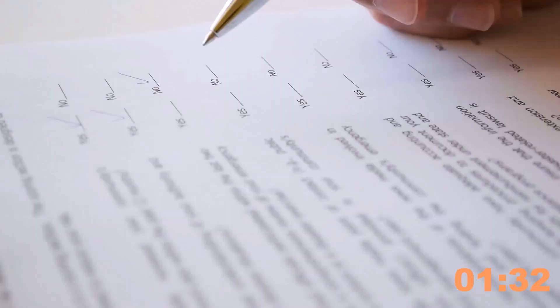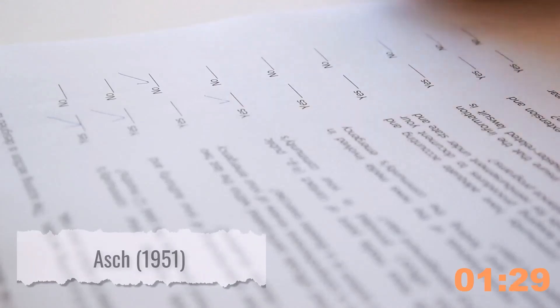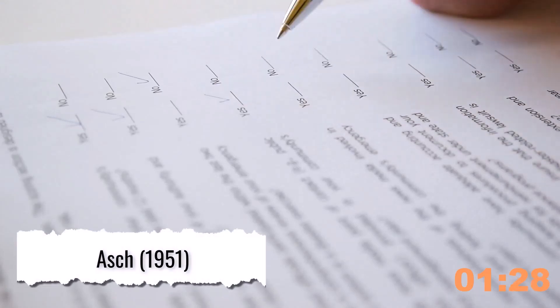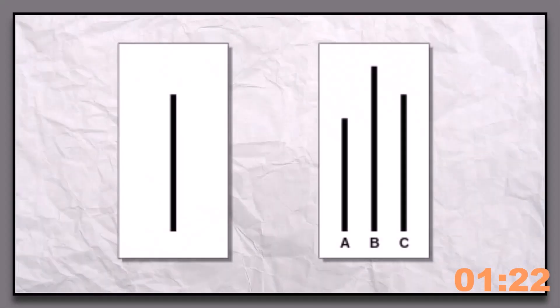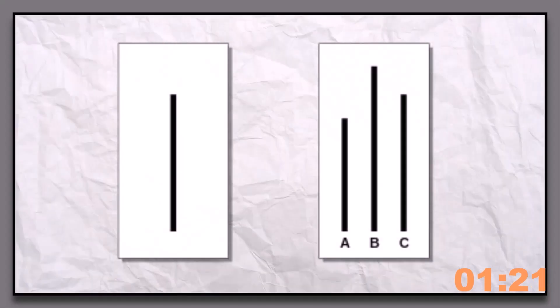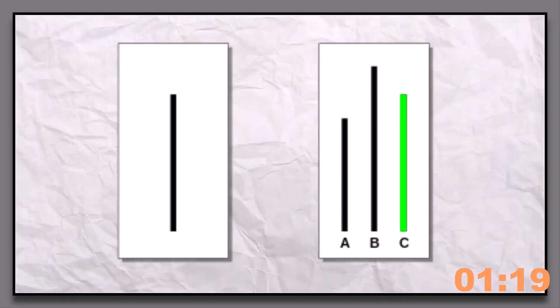The role of normative social influence is clearly demonstrated in Solomon Asch's famous line study. Participants believed they were taking part in a task where they had to match a line shown on the board to one of several options. The correct answer was always deliberately obvious.